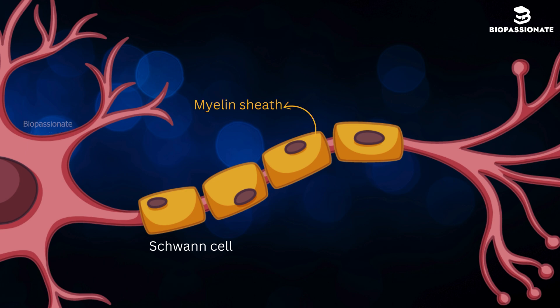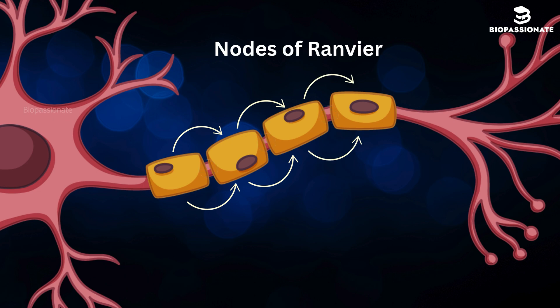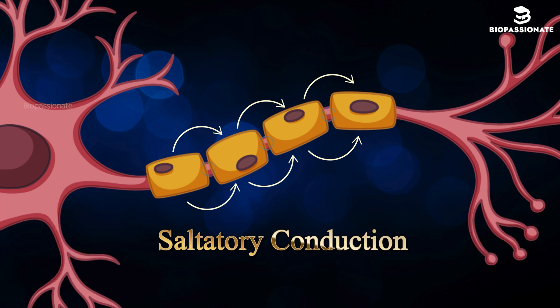This myelin acts like insulation on a wire, speeding up the conduction of the impulse. The action potential jumps from one gap in the myelin to the next. These gaps are called nodes of Ranvier. This jumping process is called saltatory conduction, and it allows the nerve impulse to move rapidly along the axon.